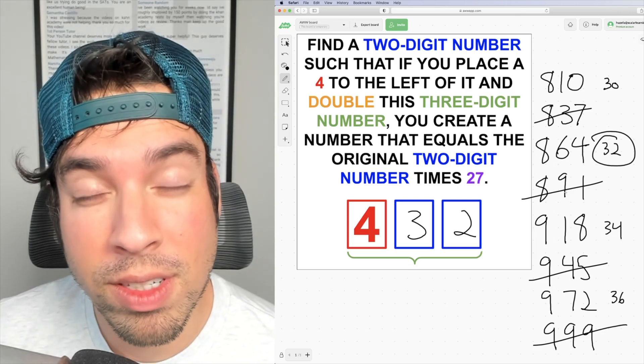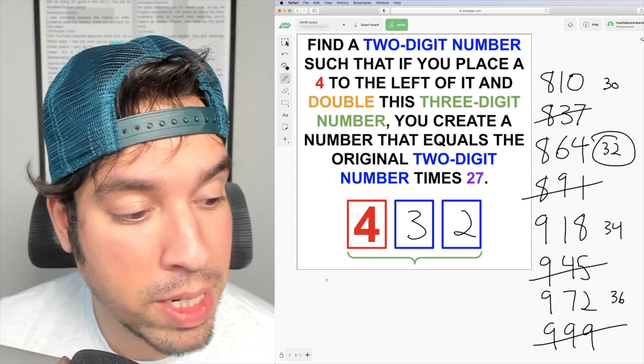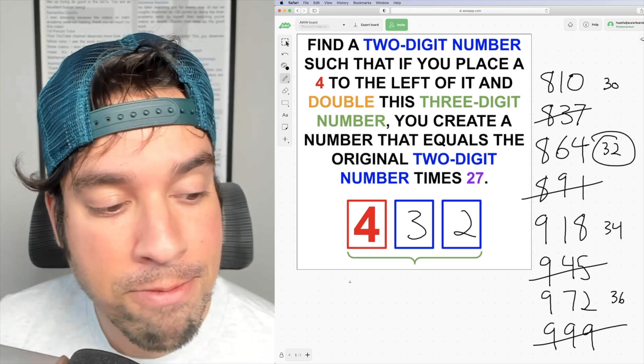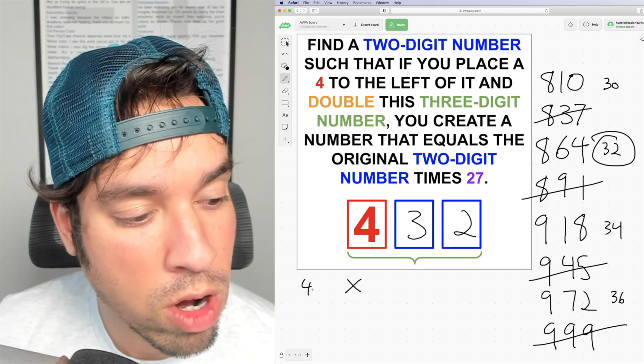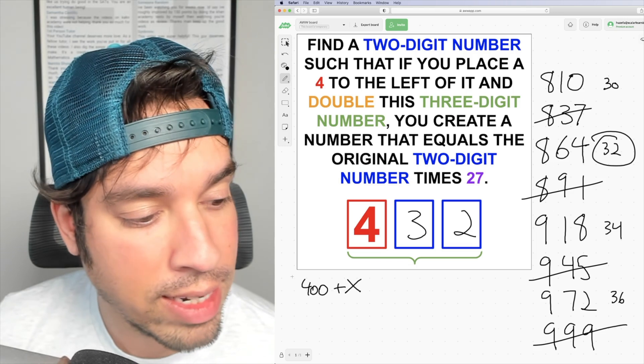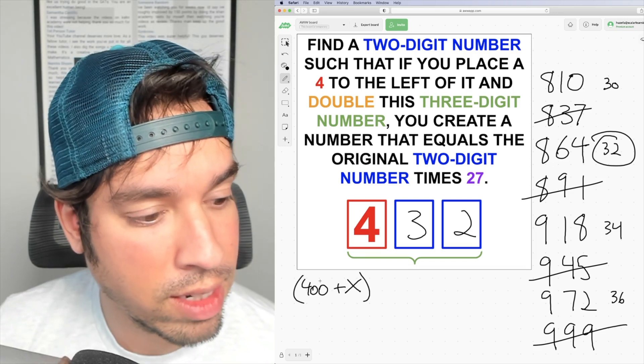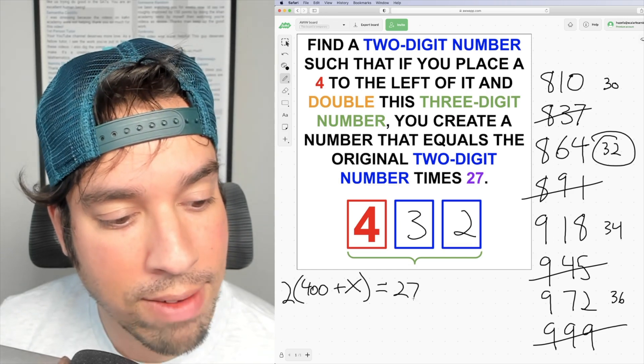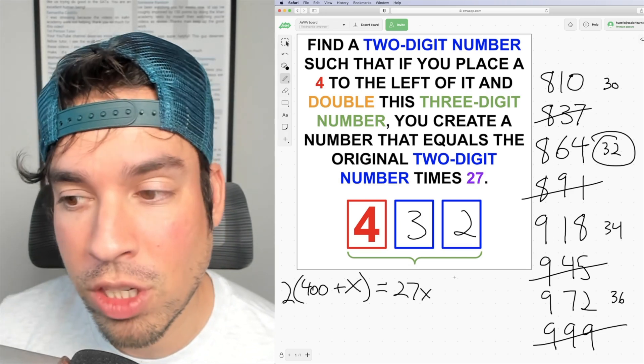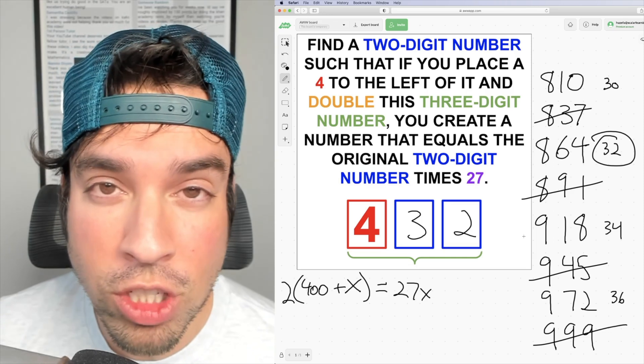Now I'm going to show you how to solve the same thing algebraically. If I have my two digit number, which I'm going to call x, I add 400 to it. And I double this number, it's going to equal 27 times the original two digit number. Now I've got a nice linear equation.